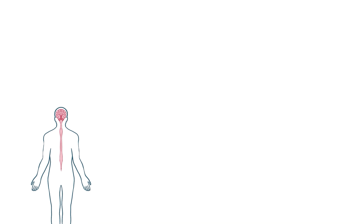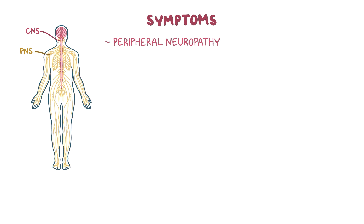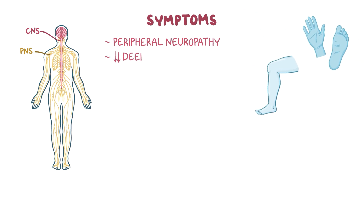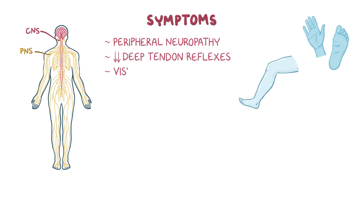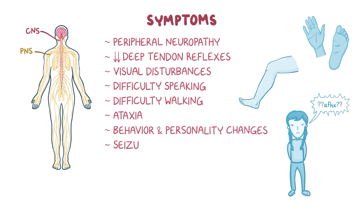Demyelination in MLD occurs both in the central as well as the peripheral nervous system, resulting in a variety of symptoms. Common symptoms include peripheral neuropathy, which is the loss of sensation in the extremities, diminished deep tendon reflexes, visual disturbances, difficulty in speaking, difficulty in walking, ataxia, behavior and personality changes, and seizures.